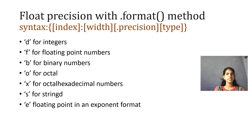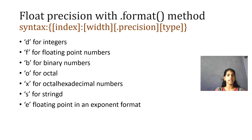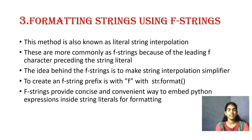Float precision with the format() method. The syntax is: index:width.precision type. Some important format types to note: d for integers, f for floating numbers, b for binary numbers, o for octal, x for hexadecimal numbers, s for strings, and e for floating point in exponent format.